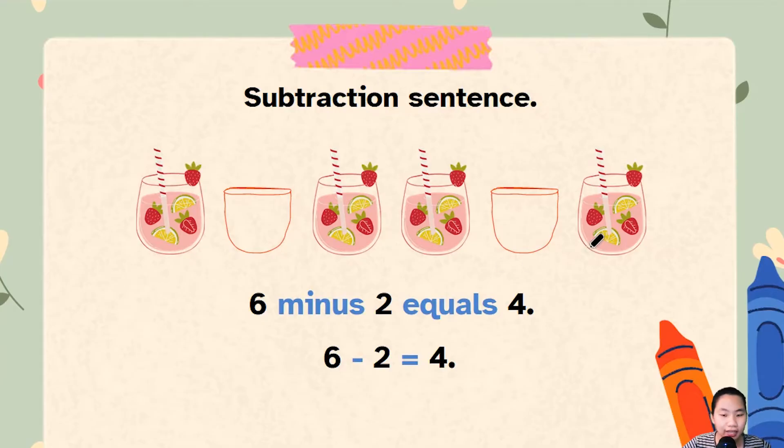So I can say six minus two equals four, okay? Or in numbers form, six minus two equals four. Very simple, very easy, just like addition.